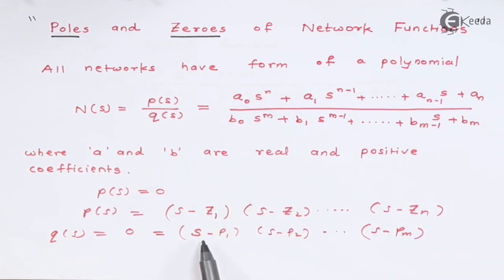So here also you can say that whenever this s takes values equal to p₁ or p₂ or pₘ, this denominator will become 0. So these are the special cases where you have to consider your network function very properly.